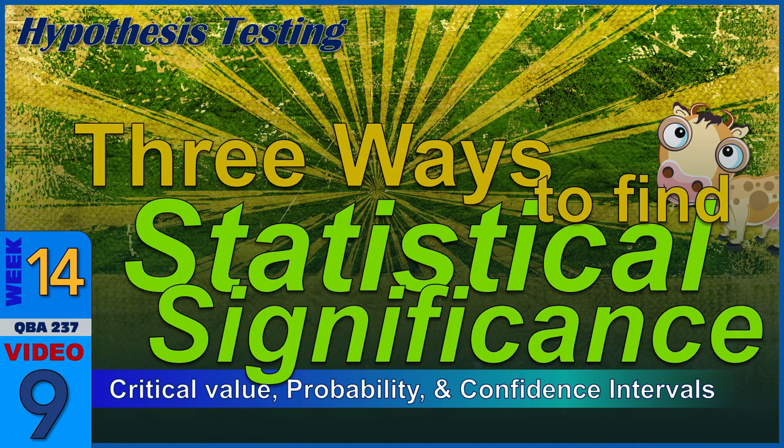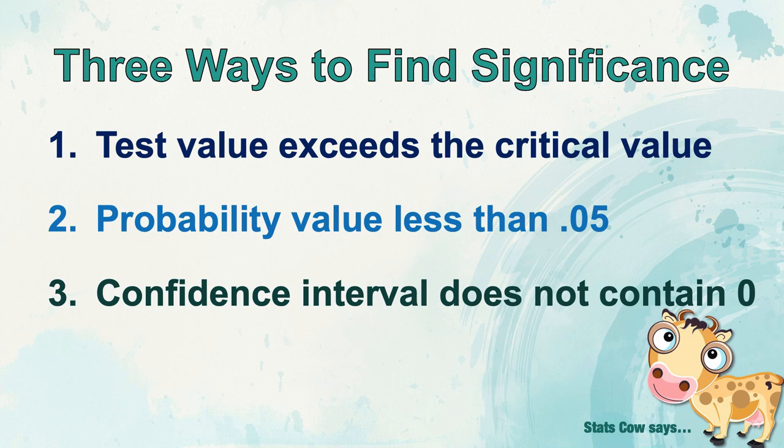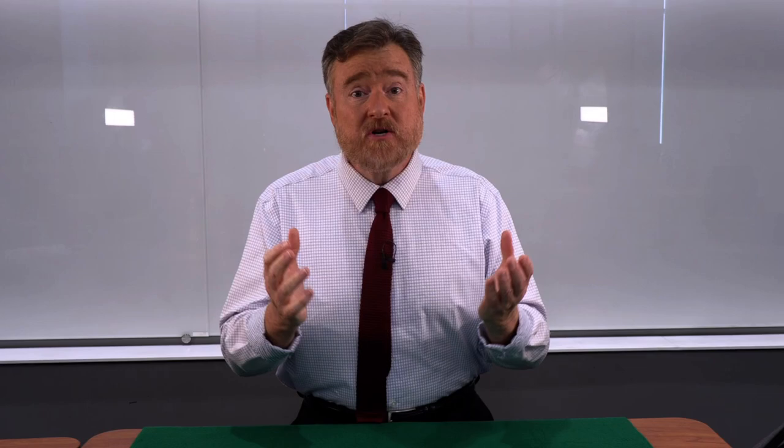Step three of our five steps of hypothesis testing is to select a criterion for significance. You may be wondering when, where, and how we choose one of these criteria for statistical significance. I'm going to explain all three of them, each with its own story about interpretation, and then show you how essentially all three give us the same answer.